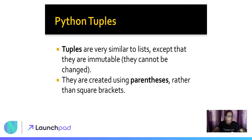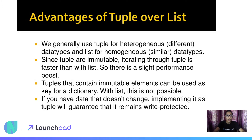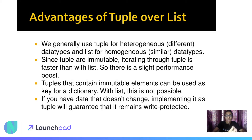The key difference is that elements in a tuple cannot be changed once assigned — certain elements are fixed, as compared to lists. So why do we use tuples over lists? We generally use tuples for heterogeneous data, meaning different data types, whereas lists are homogeneous — meaning similar data types. So tuple is heterogeneous and list is homogeneous.